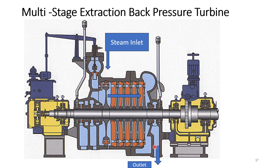In a multi-stage turbine there are many stages, and after passing through all of them the steam exits at back pressure. The steam going out is used in processes for heating because it still has some pressure. A control valve controls the steam entry, and the governing system, bearing sections, and turning gear are all present — these will be discussed in detail under steam turbine components.